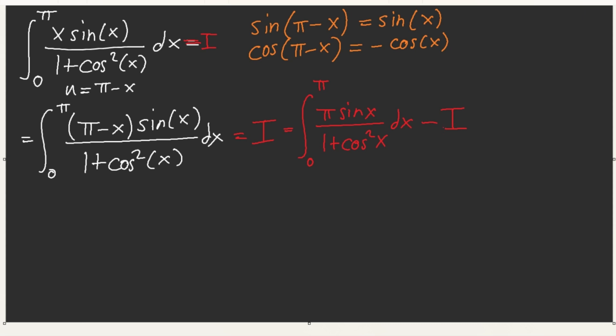Now we put that to the other side, 2I is equal to from zero to pi. We can just abbreviate this, pi sine over 1 plus cosine squared, dx. And now we can just go ahead and integrate this. I'll put this as pi over 2. So now, with this, this integral is equal to pi over 2.